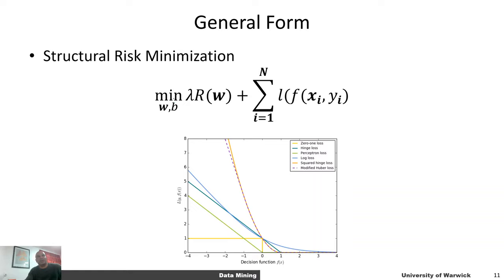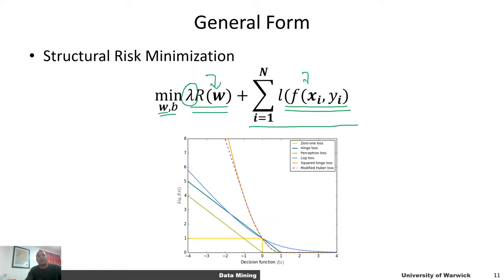Here is the general structure of these linear models: you have a loss function calculated for each example, you sum all of those losses, and you minimize them with respect to the weights and biases. You typically also have a regularization term and a hyperparameter lambda that controls the relative compromise between regularization and empirical error minimization. This is the general form of structural risk minimization.